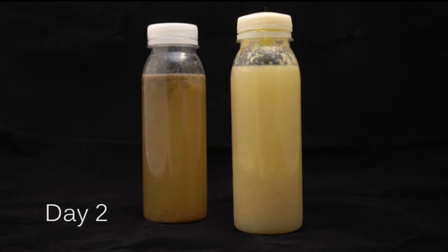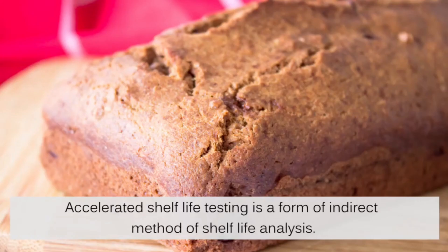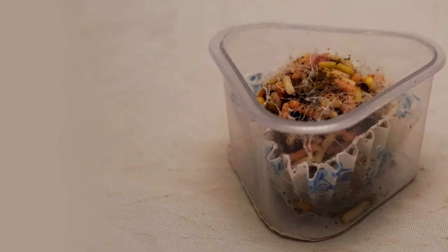Changes like these help identify the bad product from the good one. The second method of shelf life analysis is the accelerated shelf life testing, which is a form of indirect method of shelf life analysis. Here, the food product is stored in an accelerated chamber having pre-set temperature and relative humidity.